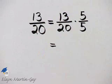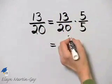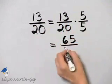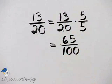13 times 5 is 65, and 20 times 5 is 100.